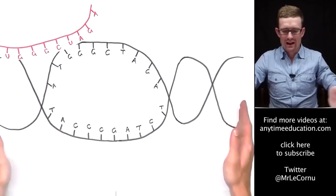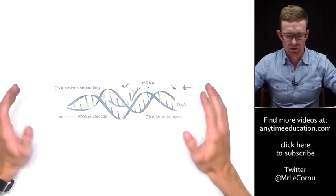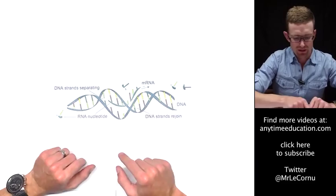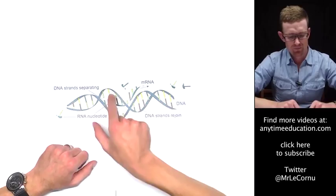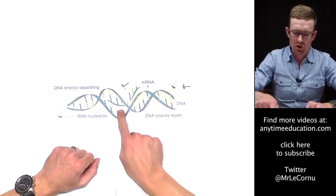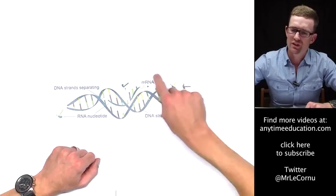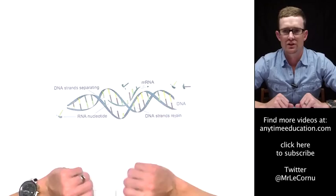Here's just another diagram of the same process of transcription that I just showed you. You've got the DNA strands which are separating at the location of the gene, the RNA nucleotides are coming in and base pairing in a complementary manner to produce a messenger RNA molecule, which then moves out of the nucleus. The DNA strands rejoin, and that's our process of transcription.